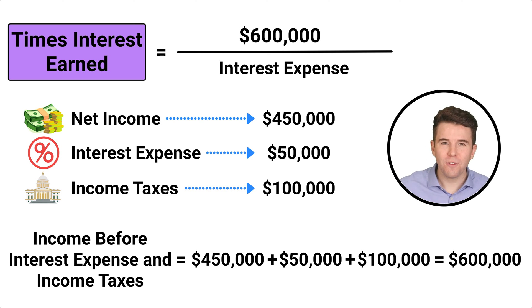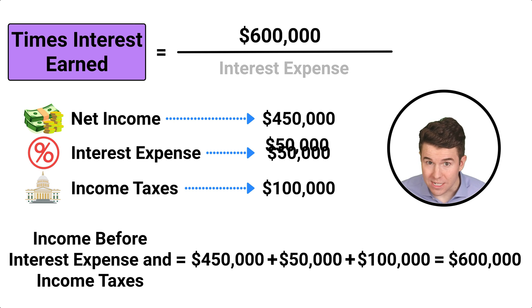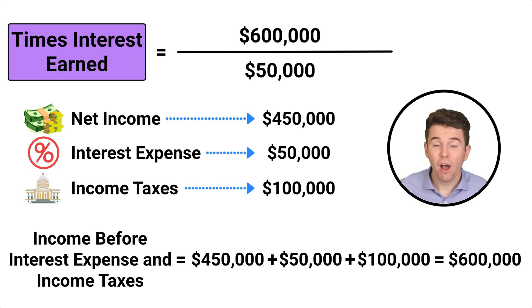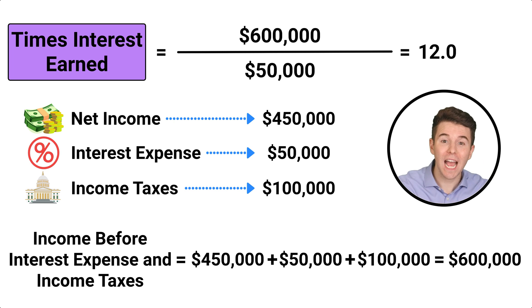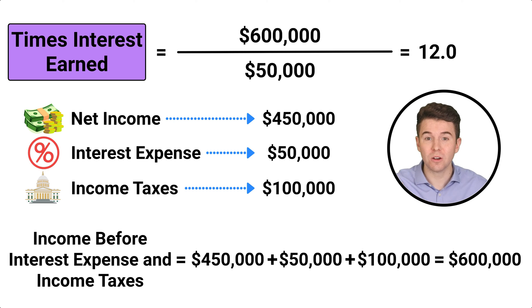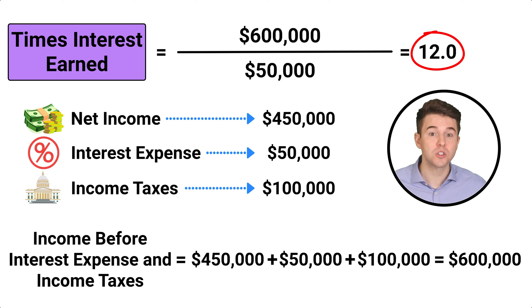After that, we divide by interest expense of $50,000 to get a Times Interest Earned ratio of 12.